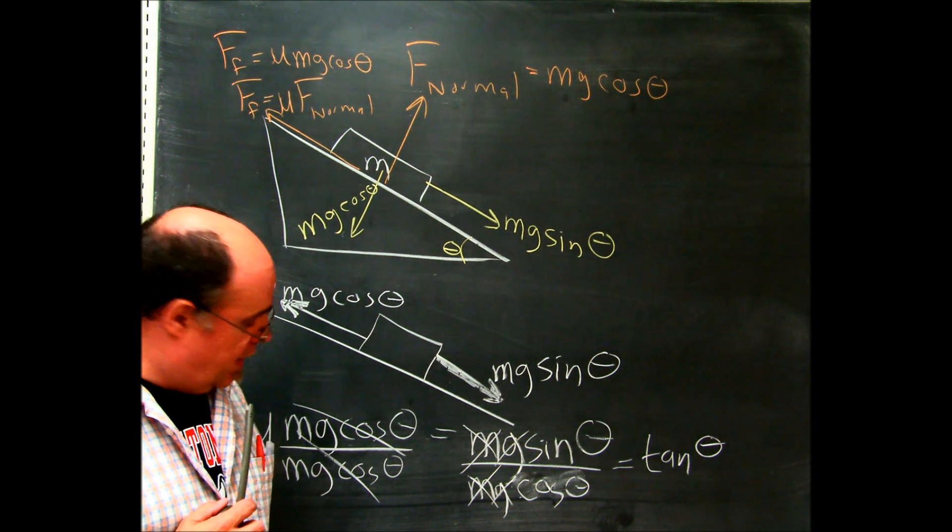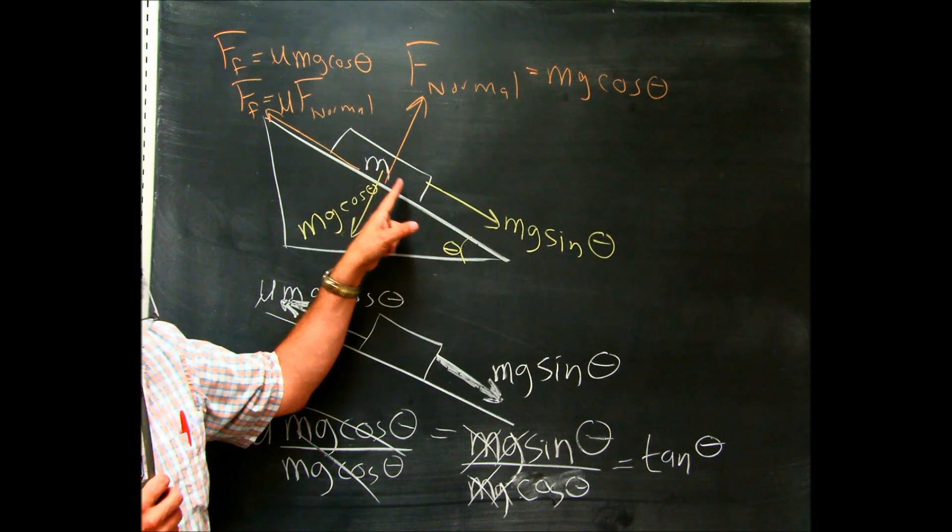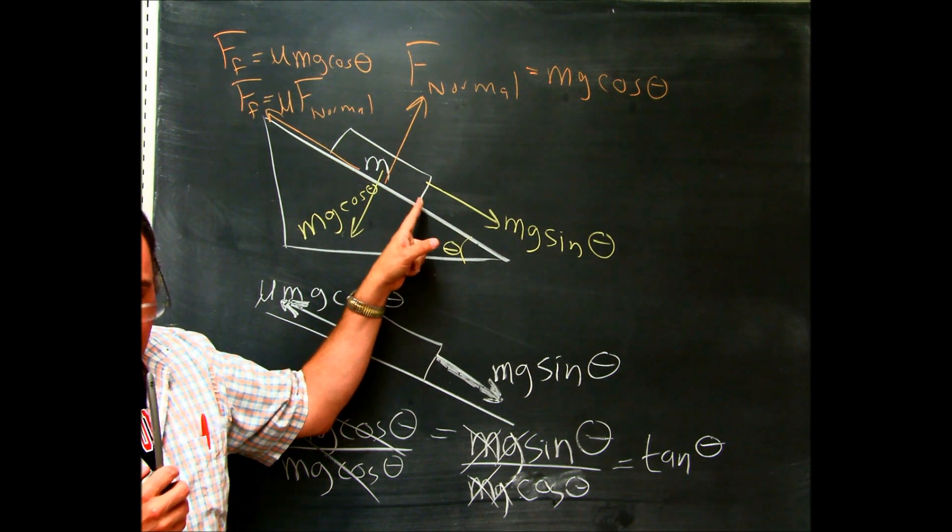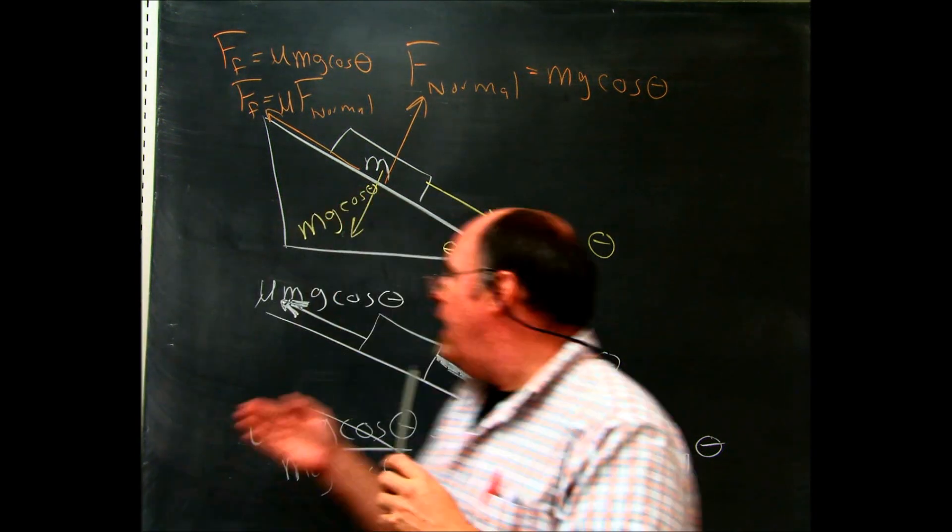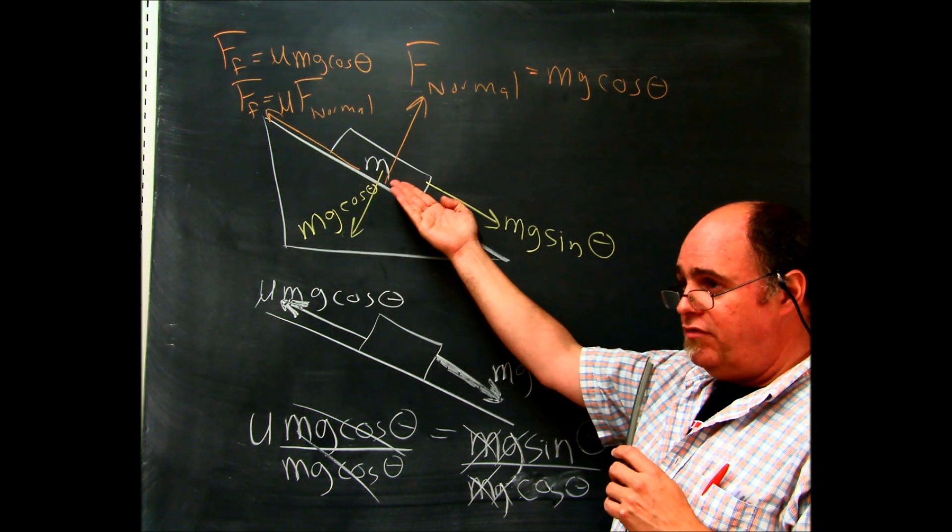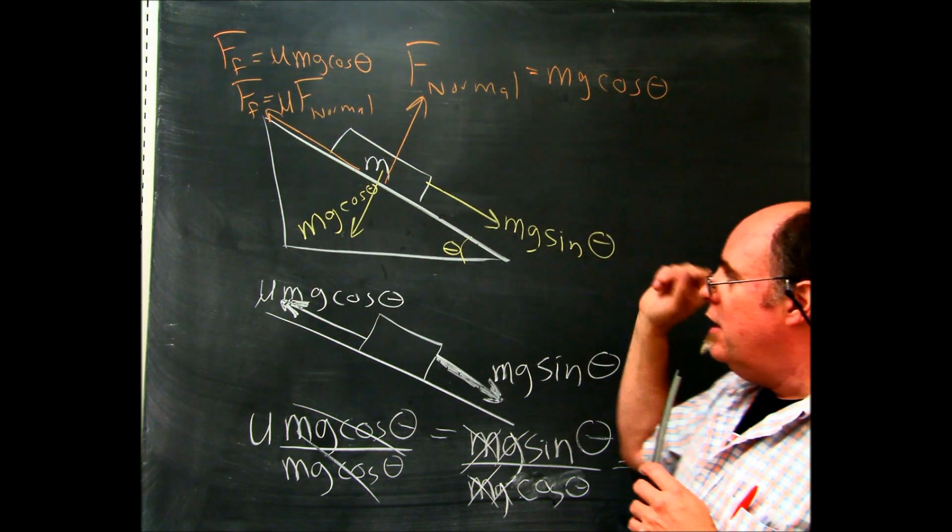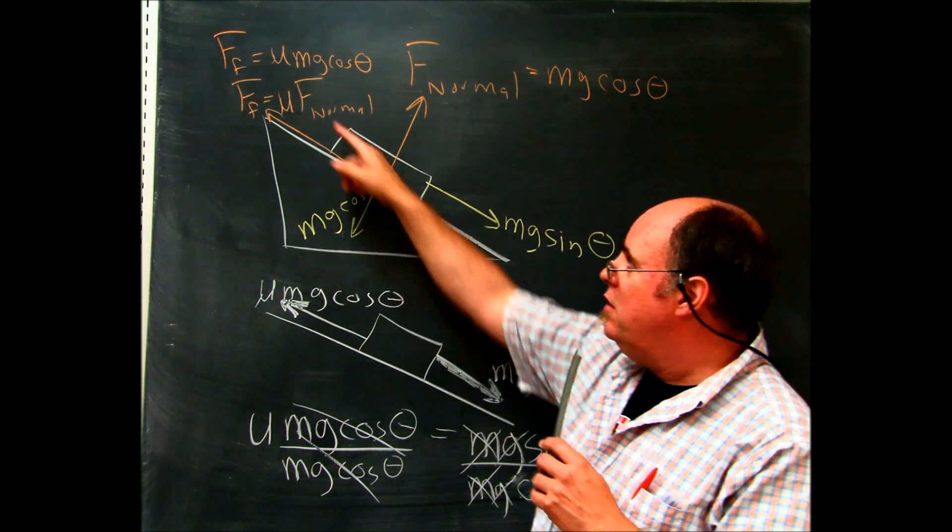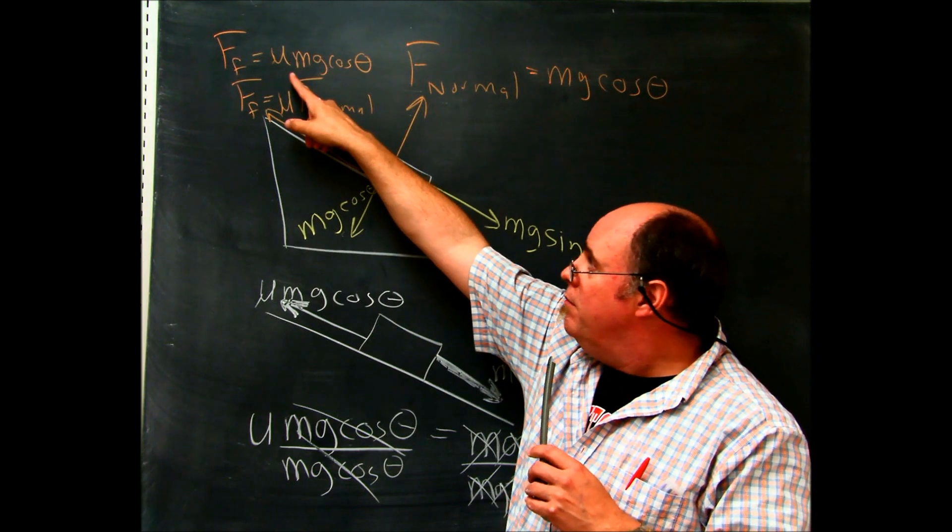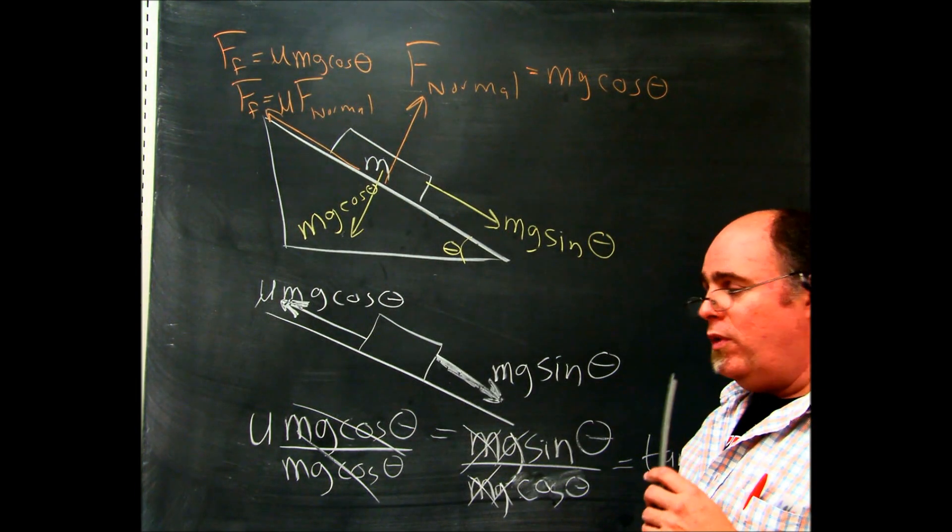So, with all that said, what happens is, if you put a sled, or block of wood, or something, onto a ramp, and you slowly lift up the angle, and slowly lift up the angle, and slowly lift up the angle, the force going down, mg sine of the angle, is always equal and opposite to the force going up, mu mg cosine of the angle.